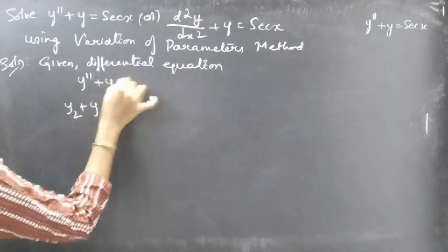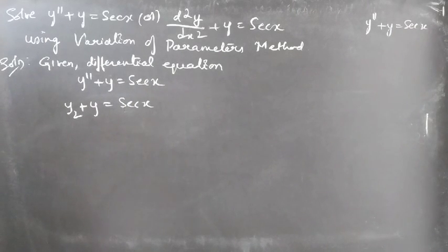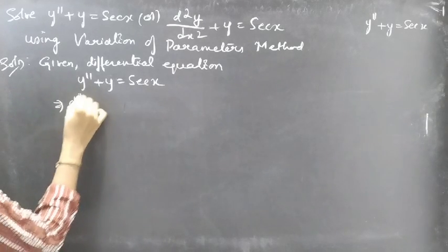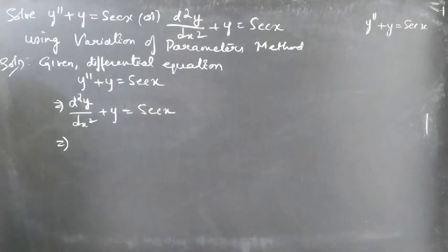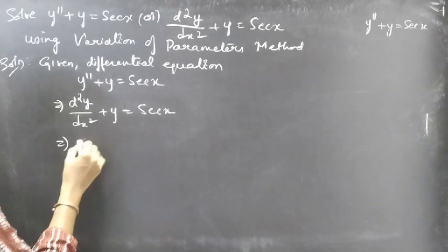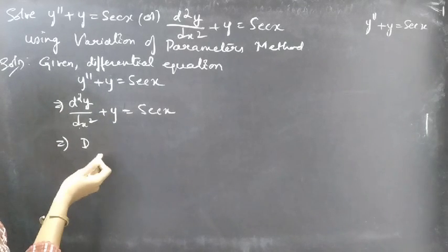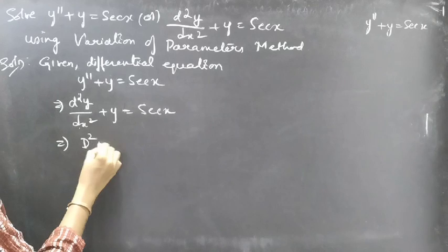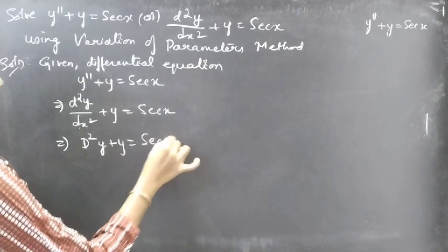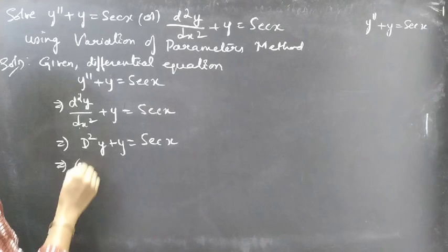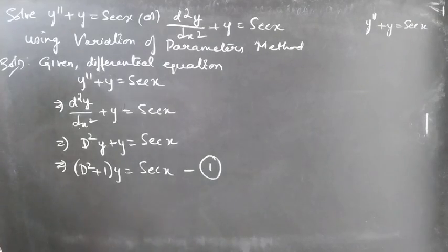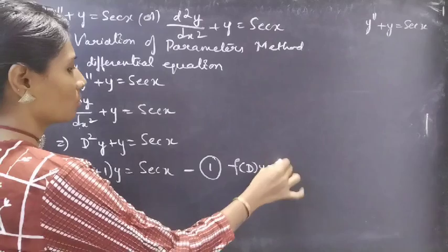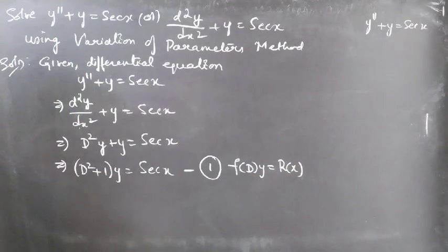The given differential equation is y'' + y = sec(x), or d²y/dx² + y = sec(x). Writing this in operator form, we replace d²y/dx² with the differential operator D², giving D²y + y = sec(x). Taking y common from the two terms yields (D² + 1)y = sec(x). Consider this as equation 1, of the form f(D)·y = R(x), where R(x) = sec(x).